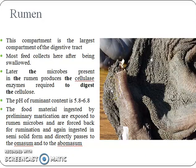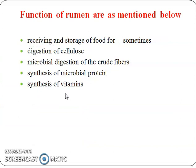Let us describe each compartment of the ruminant digestive system. Rumen: this compartment is the largest compartment of the digestive tract. Most feed collects here after being swallowed, and later the microbes present in the rumen produce cellulose enzymes required to digest cellulose. The pH of rumen content is 5.8 to 6.8. Food material ingested by preliminary mastication is exposed to rumen microbes, forced back for rumination, and again ingested in semi-solid form, then passes to the omasum and abomasum. Functions of rumen include: it shifts and stores food for some time, there is digestion of cellulose and microbial digestion of crude fibres, and the rumen also helps in synthesis of microbial proteins and vitamins.